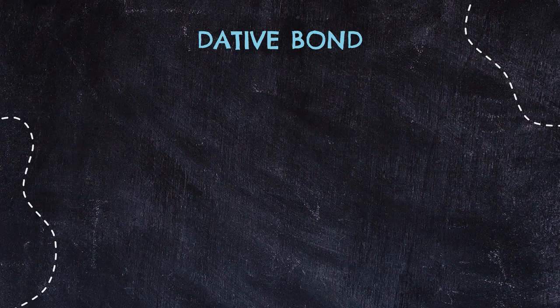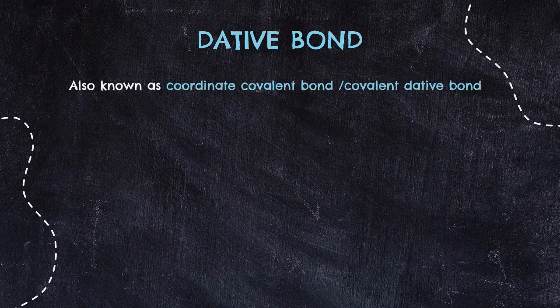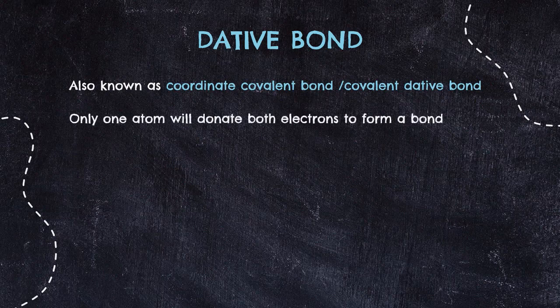There is another bond considered as a covalent bond — still sharing of electrons, but the way the electrons are shared is a bit different. This bond has two names: sometimes called coordinate covalent bond, and sometimes dative covalent bond. Both are the same. Sharing of electrons in this dative bond involves only one atom that donates both electrons.